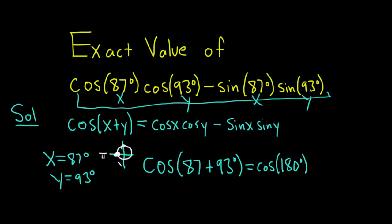Cosine is the x-coordinate on the unit circle, and the x-coordinate here is negative 1. So this equals negative 1, just by the unit circle. It's really easy because it's a quadrantal angle.